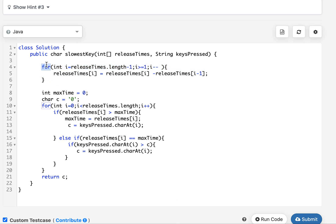In the first loop, I have updated the release time to store the duration for which each key was pressed. And instead of iterating from the starting index up till the last index, I have iterated in the reverse direction starting from the last index to the first index so that it makes my logic simpler. And I simply update release of i equals to release of i minus release of i minus one.